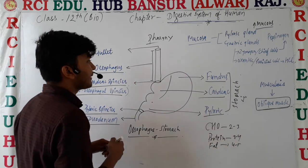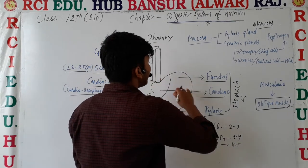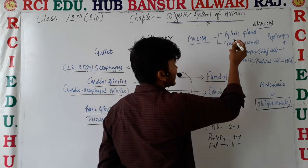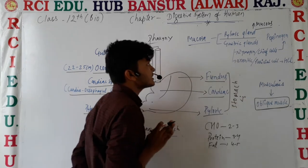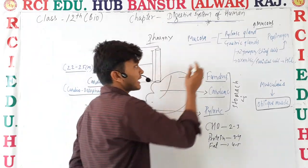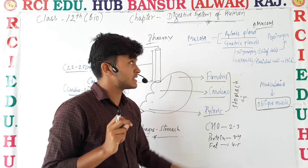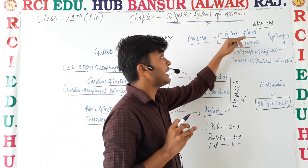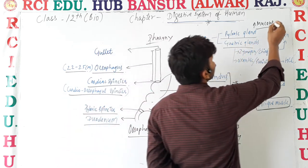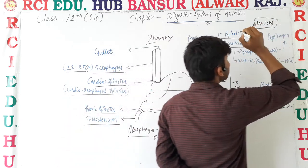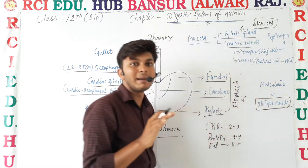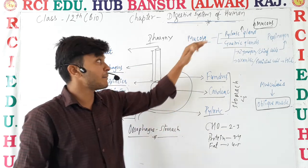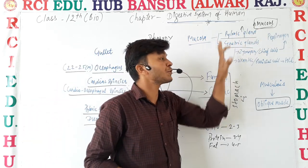Now we talk about the infolds in the stomach. Within these infolds, there are glands. The stomach contains two types of glands: number one is pyloric glands and number two is gastric glands. The pyloric gland's basic function is the secretion of mucus, and it is also known as the goblet gland.